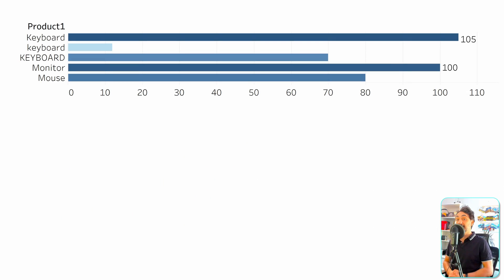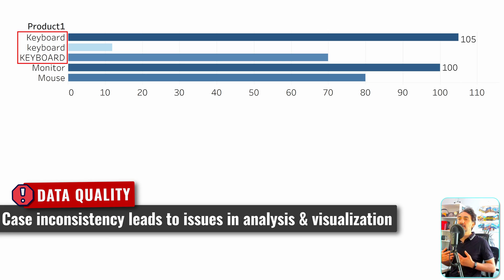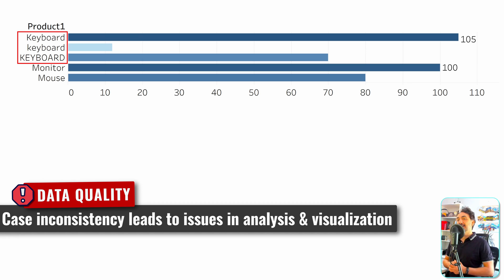Let's check the following data quality issue in our view. If you look at the dimension products, we have three values for the same word — keyboard appears three times, which is wrong. That's because the data quality from the source system is simply low. This happens when many people work on a project with a lot of products and may enter different names for the same product. So here we have a case issue in the product name. Normally I would contact the source system about such data quality issues, but sometimes it takes a long time for them to fix it.